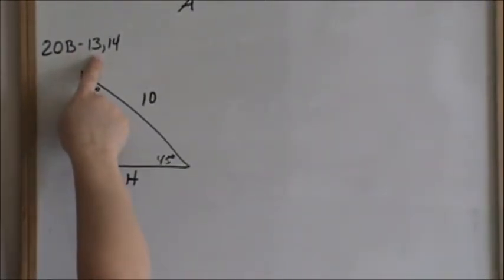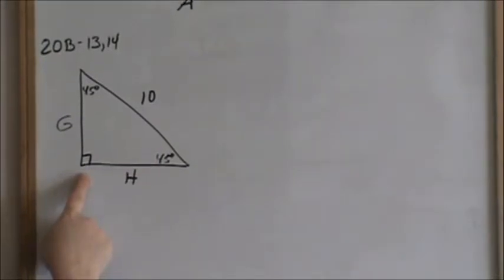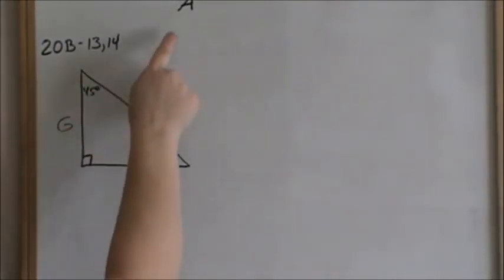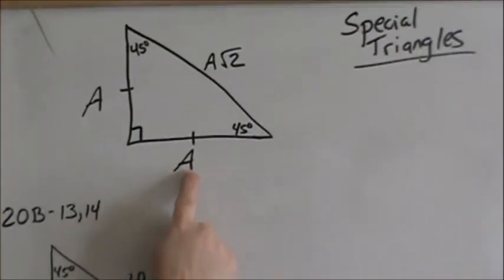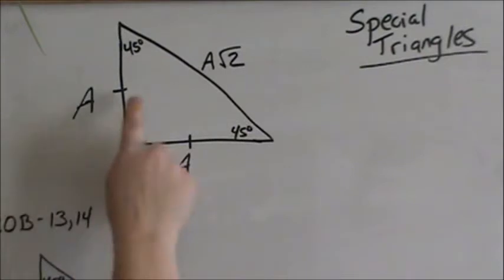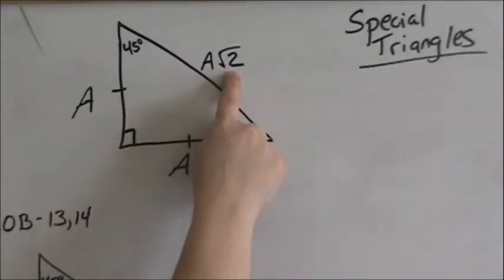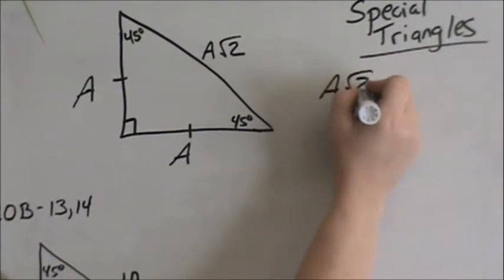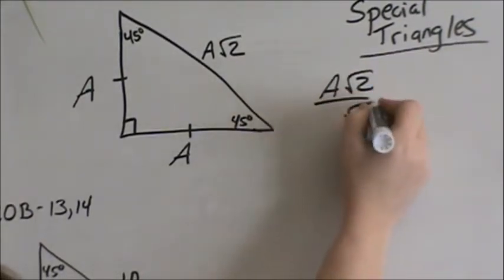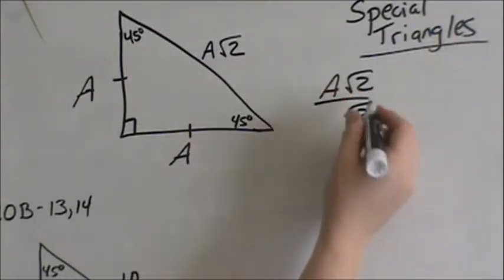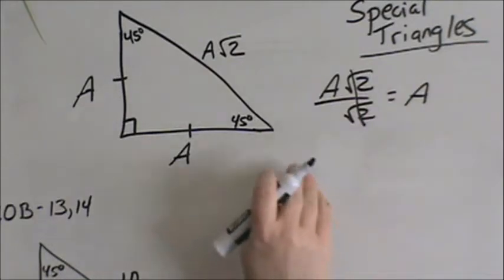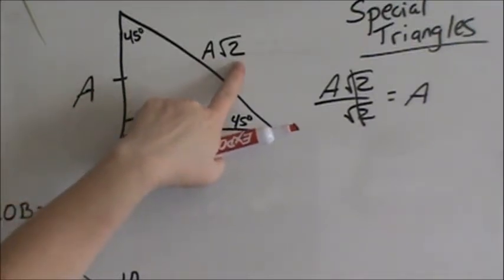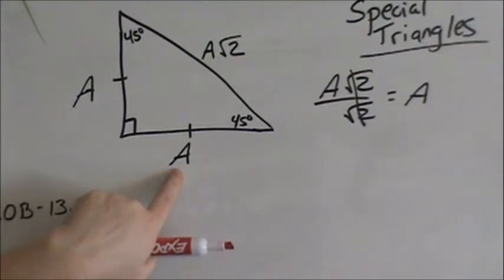Now we're going to do 20B, 13 and 14. You can see that it is a 45-45-90 triangle. We are given the hypotenuse and now we are trying to find the legs. Let's go back to our general triangle: legs are A and A, and the hypotenuse is A square root of 2. How do we go from the hypotenuse back to a leg? We divided by square root of 2, because then our square root of 2's cancel and we're left with A. So anytime you are given the hypotenuse and you need to go back to a leg, you just divide by square root of 2 so your square roots of 2 cancel and you are left with the leg.